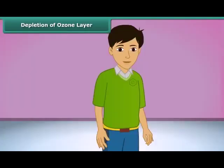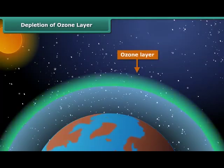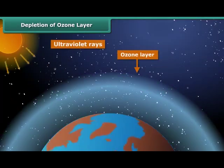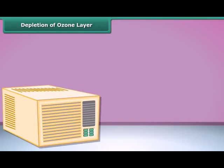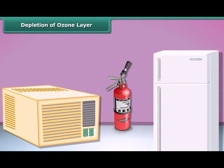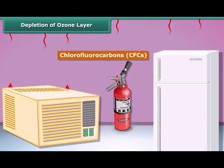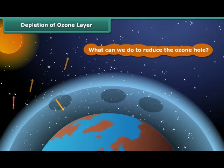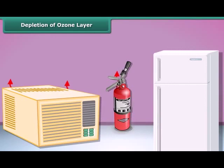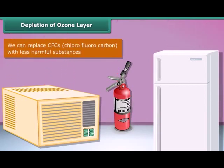Let us learn about the ozone layer. It is a layer of ozone gas in the upper atmosphere of Earth. It protects us from the harmful ultraviolet rays of the sun. Things like air conditioners, refrigerators, and fire extinguishers release chlorofluorocarbons (CFCs) into the atmosphere, creating holes in the ozone layer. CFCs are another type of air pollutant. We can replace CFCs with less harmful substances to save the ozone layer from depletion.